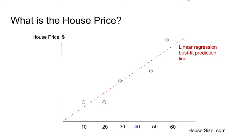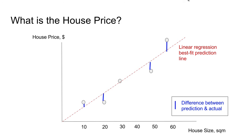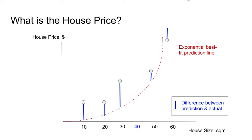In our linear regression case, the cost is actually the difference between the actual point, which is the black dot, and the predicted values, which is the projection of the black dot onto the red line. If we sum up all the differences, which are the blue lines, it will be the cost of this linear regression model. For an exponential model, we can repeat the same thing — by summing up all the blue lines, we can get the cost of this exponential model.